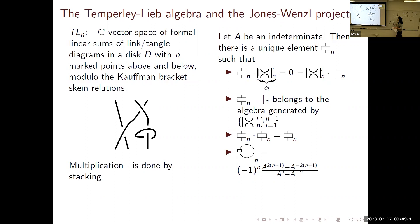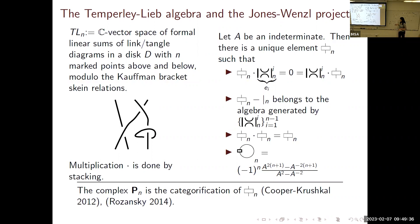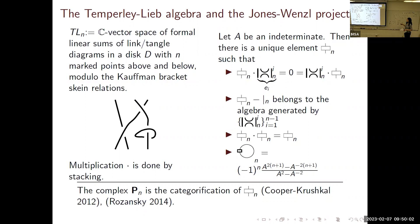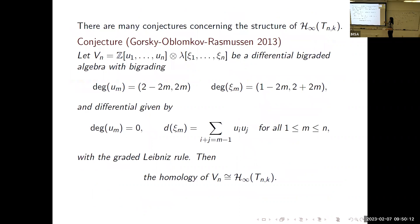There is a categorical version of this: everything gets replaced by complexes, zero is replaced by homotopically equivalent to the trivial complex. Cooper and Krushkal show that as long as your complex satisfies the categorical versions of these defining properties of the projector, then it is a categorification of the Jones-Wenzl projector. This is how Rozansky showed that the complicated complex he constructed is indeed a categorification of the Jones-Wenzl projector.